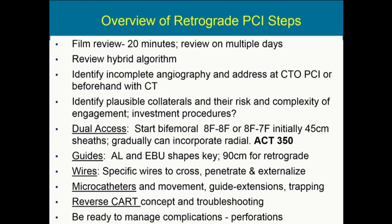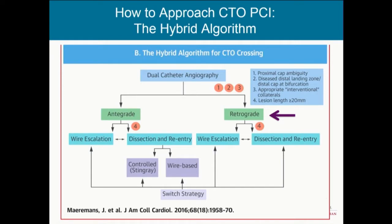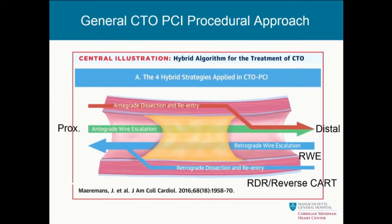These are the high-level overviews. The hybrid algorithm — which you've now seen multiple times — considers proximal cap ambiguity, the distal landing zone, whether it ends at a bifurcation, and whether antegrade dissection reentry is feasible. Antegrade dissection reentry is very hard when a bifurcation is truly involved. When there are appropriate interventional collaterals and long lesions, these features really stratify towards a retrograde approach. In general, there are really only four ways: either through or around, and either forwards or backwards. On the retrograde side, we can escalate with wires or we can dissect and reenter.